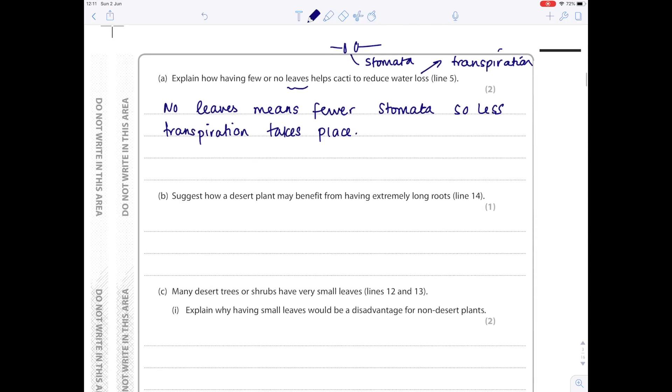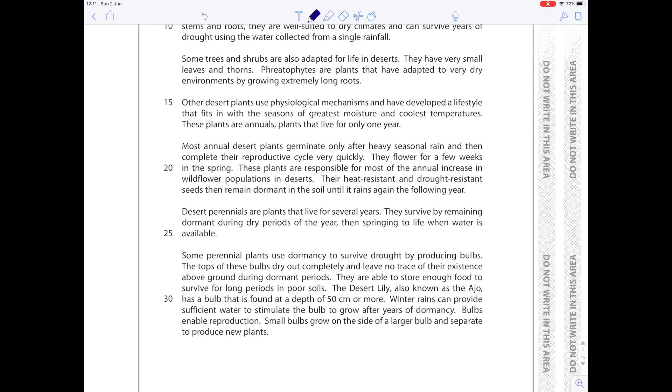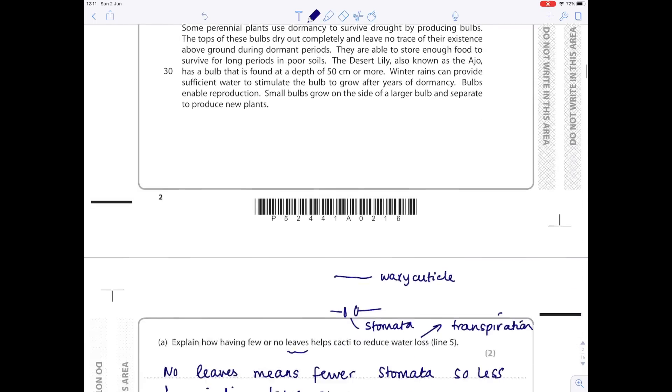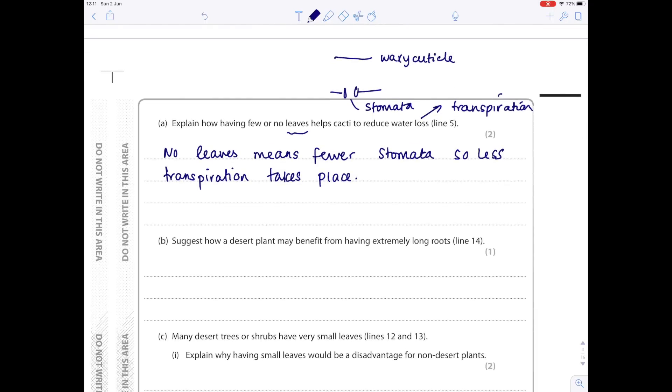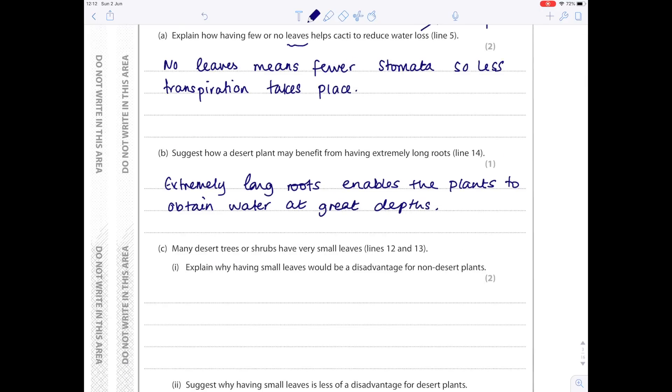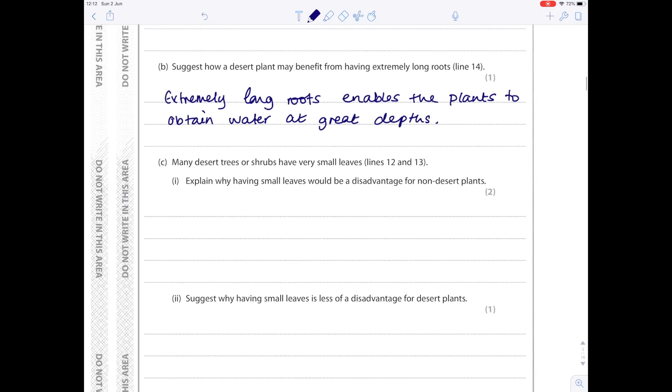Suggest how a desert plant may benefit from having extremely long roots, line 14. Again, it hasn't told us anything, so what would be the major advantage of having extremely long roots? That's so they can reach down and obtain as much water as possible from depth. You could also say it's for anchorage, which is to hold the plant down.